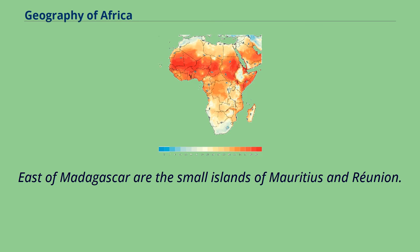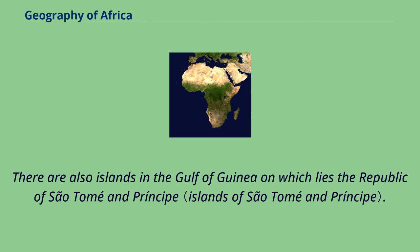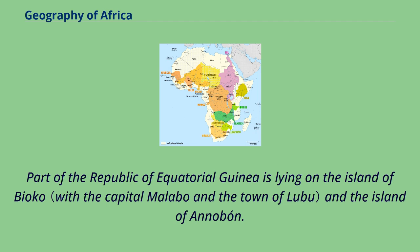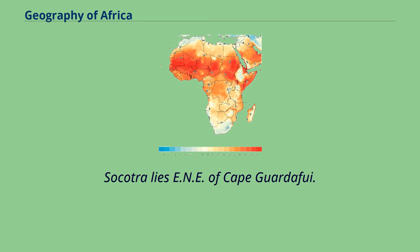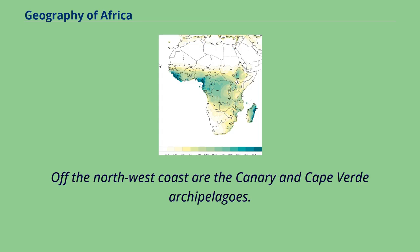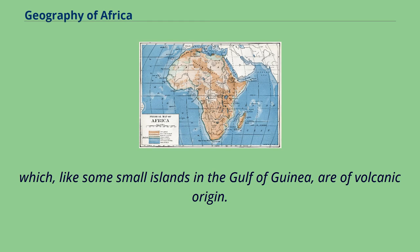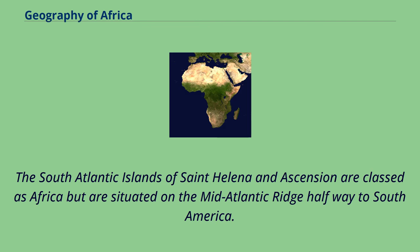East of Madagascar are the small islands of Mauritius and Réunion. There are also islands in the Gulf of Guinea, on which lies the Republic of São Tomé and Príncipe. Part of the Republic of Equatorial Guinea lies on the island of Bioko and the island of Annobón. Socotra lies east of Cape Guardafui. Off the northwest coast are the Canary and Cape Verde archipelagos, which, like some small islands in the Gulf of Guinea, are of volcanic origin. The South Atlantic islands of St. Helena and Ascension are classed as Africa but are situated on the Mid-Atlantic Ridge, halfway to South America.